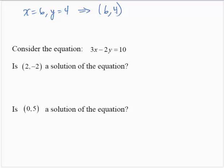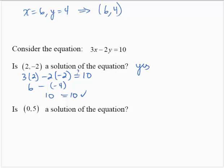Considering the equation 3x minus 2y equals 10, we can ask: is the ordered pair (2, negative 2) a solution? Check by substitution: 3 times 2 minus 2 times negative 2 — is this equal to 10? 3 times 2 is 6, and 2 times negative 2 is negative 4. So 6 minus negative 4 is 10. 10 equals 10, so yes, (2, negative 2) is a solution.